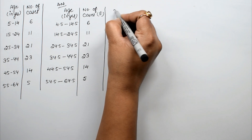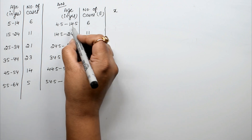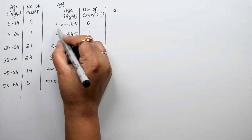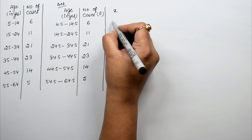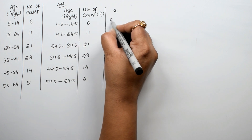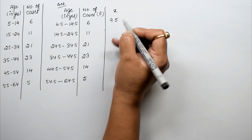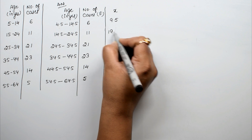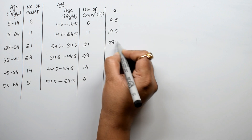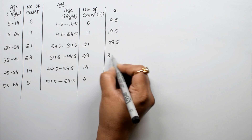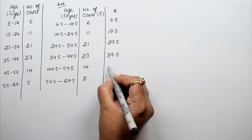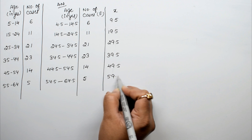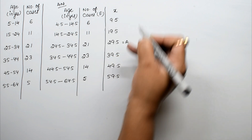We calculate the midpoint x for each class by adding the lower and upper limits and dividing by 2. So (4.5 + 14.5) / 2 = 9.5. The midpoints are: 9.5, 19.5, 29.5, 39.5, 49.5, and 59.5. We take the assumed mean a = 29.5.